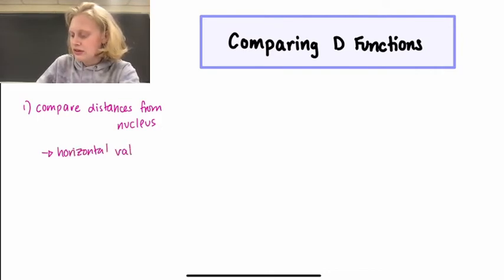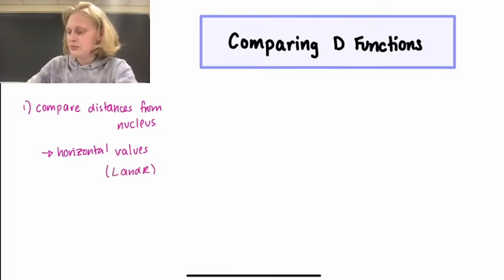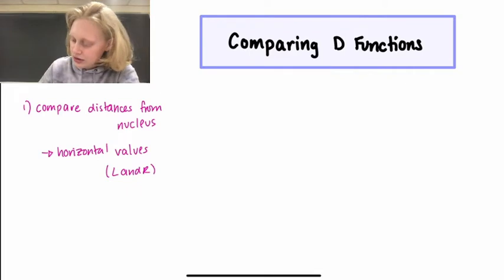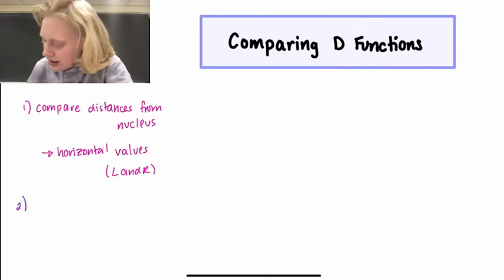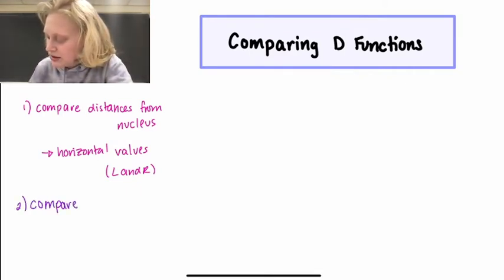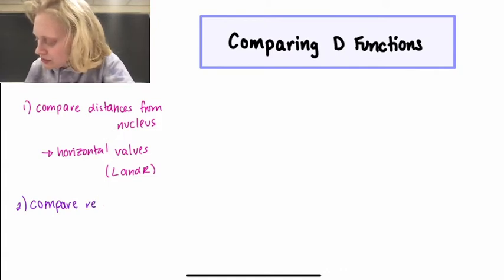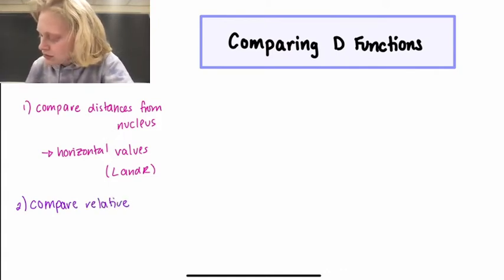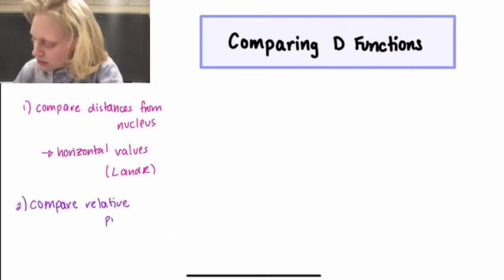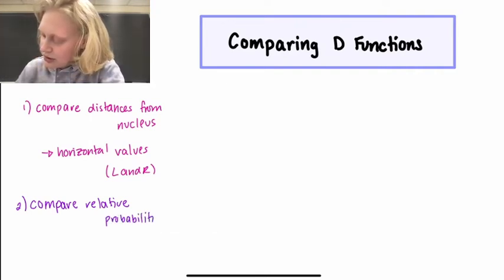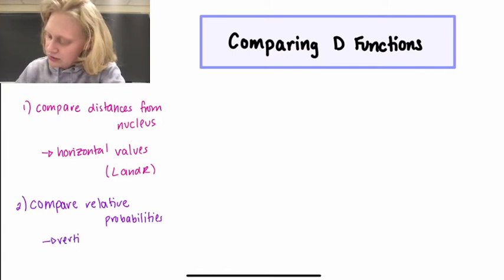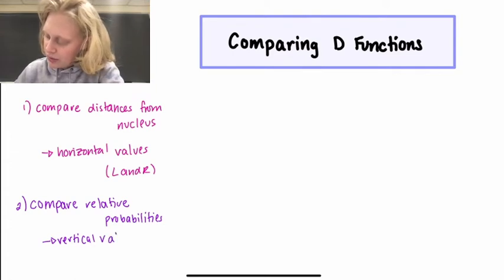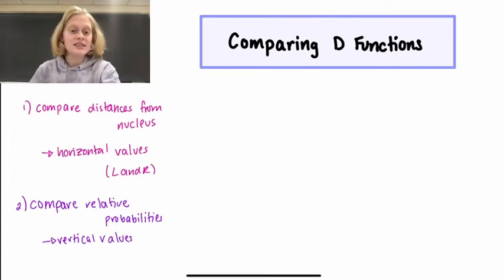So this might be in the form of left and right. The second conclusion that we came to is that if we want to compare relative probabilities, then we need to compare vertical values. And this might come in the form of comparing the heights of the peaks.